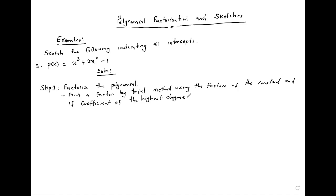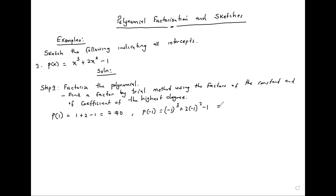So we get a function P and try 1, which is a factor of 1. We get 1 plus 2 minus 1, giving us 2, which is not zero. We try negative 1: we get negative 1 cubed plus 2 times negative 1 squared minus 1, giving us negative 1 plus 2 minus 1, which is zero.